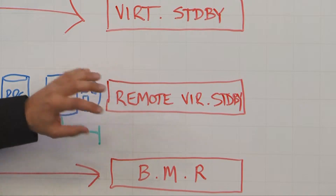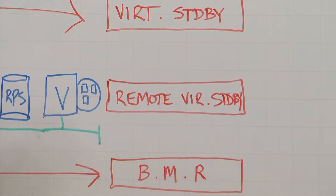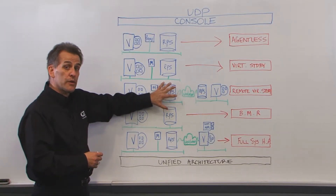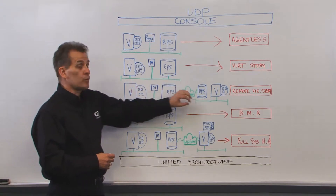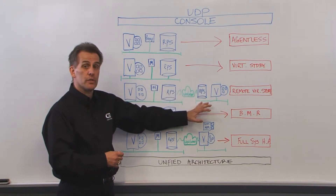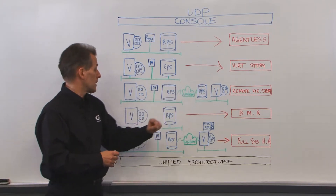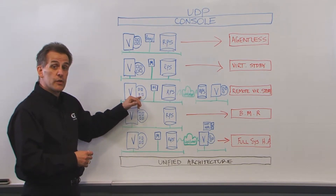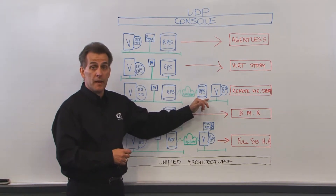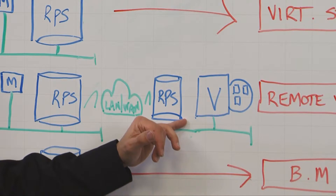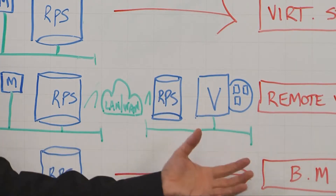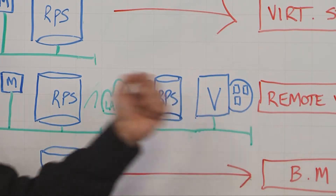Remote virtual standby is very similar to virtual standby, but the backups on the recovery point server on your production site are replicated to the standby site recovery point server. Should something happen to one of these virtual machine guests, the monitor retrieves that last backup and on the fly stands it up on your disaster recovery site.